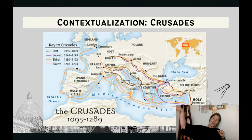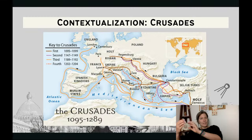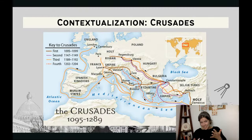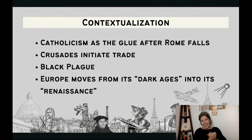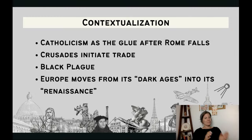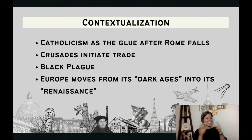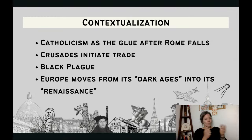The Crusades ended up creating a lot of positive consequences for Europe because they opened Europe back up to the rest of the world — which was in its golden ages while Europe was in its dark ages. Trade routes across Asia and Northern Africa connected through the Holy Land and Constantinople. Europe got reconnected to trade, which leads to the Renaissance, but also brings bad things like the Black Plague, which made its way from Asia across to Europe.